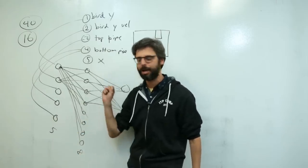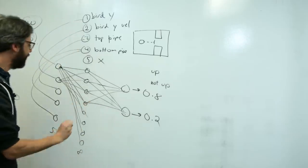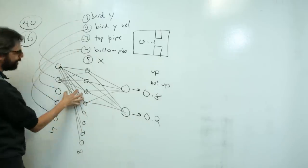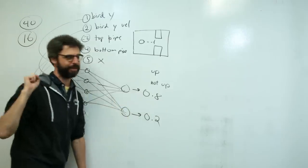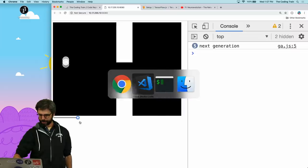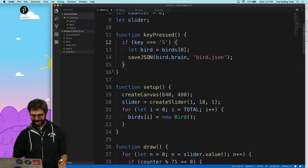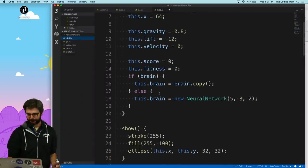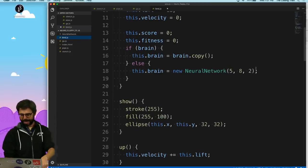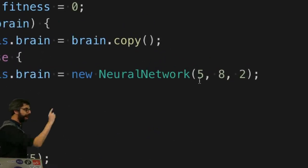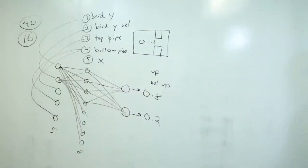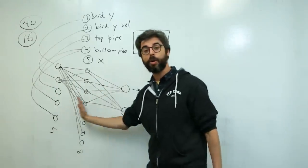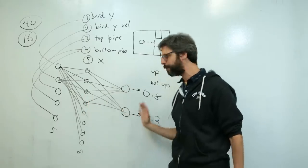What you need to know here is that I have a way of creating this neural network, feeding values into it, and looking at the outputs. Let's go look at the code. There's this idea of a bird object, and the bird object makes a neural network with five inputs, eight hidden nodes, and two outputs. This is known as a feed-forward neural network, or multi-layered perceptron.